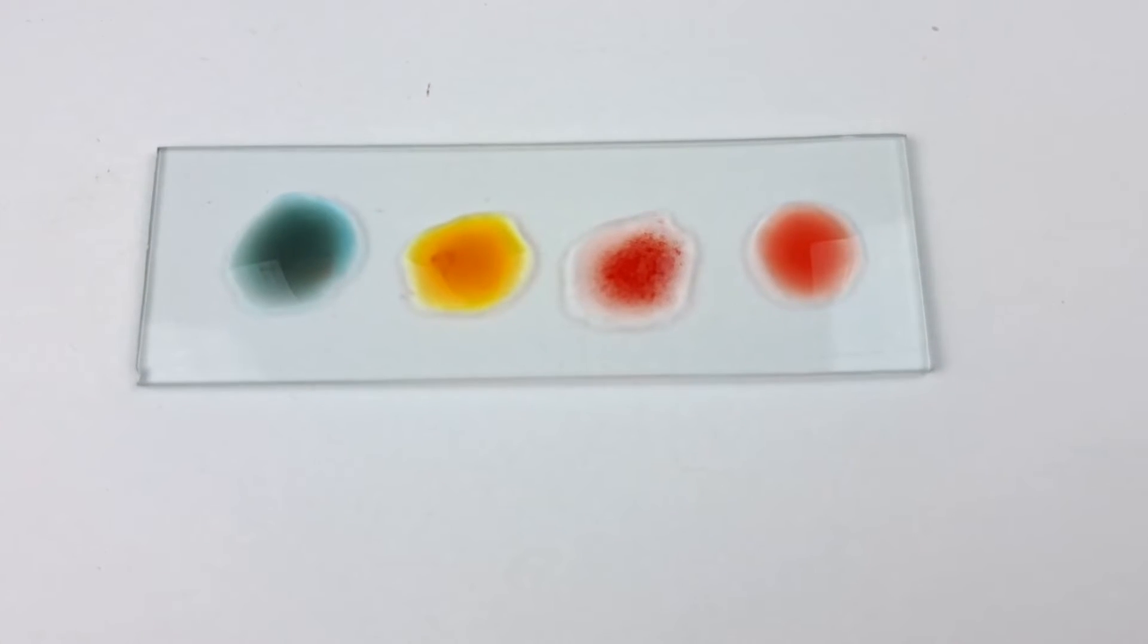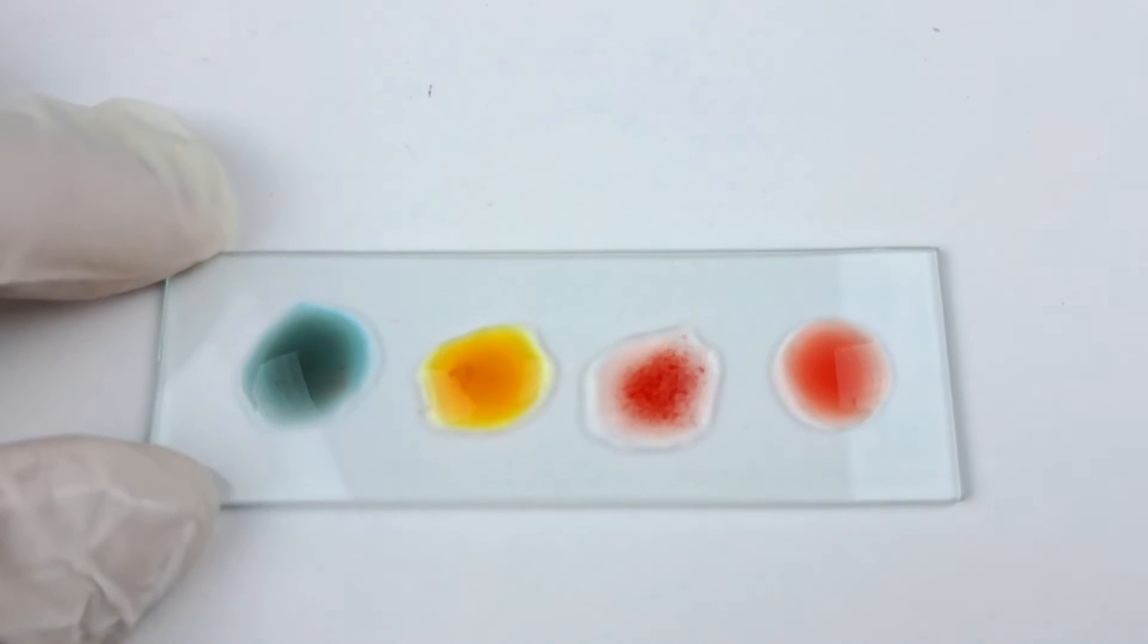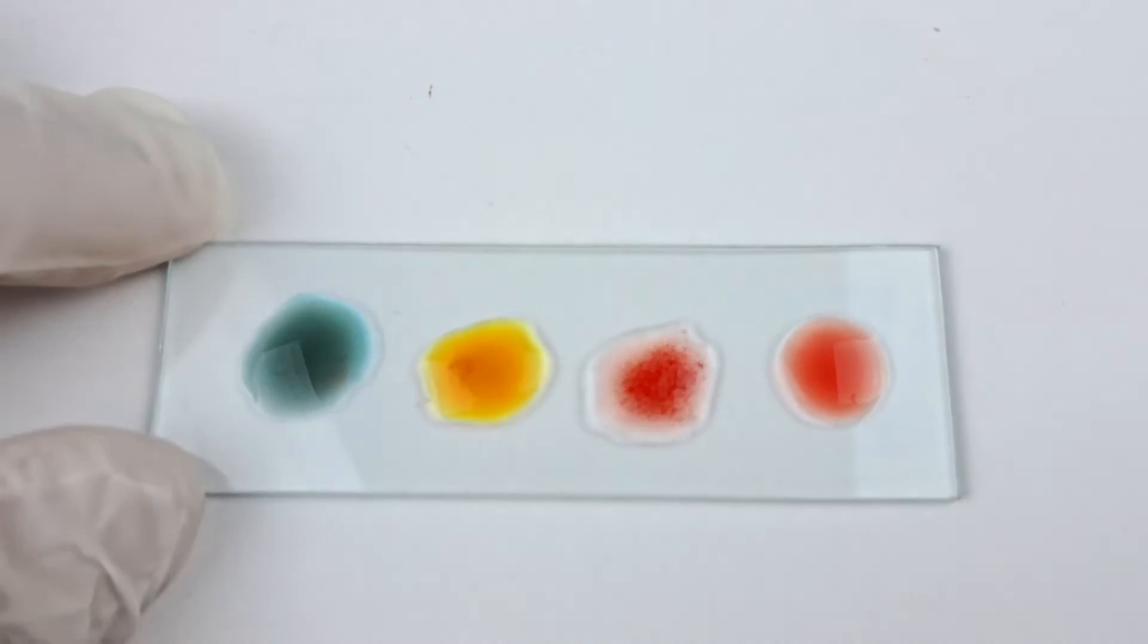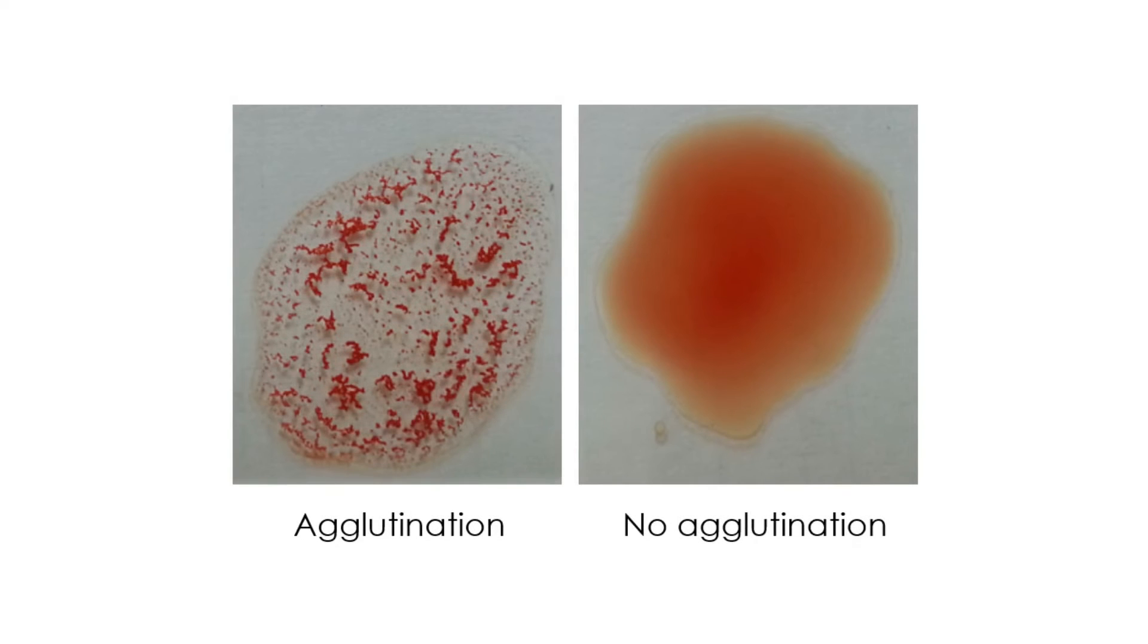At the end of this time period, check for agglutination or clumping of RBCs in the four mixture drops. For quick reference, clumping or agglutination looks something like the photo on the left as compared to the photo on the right which shows no agglutination.